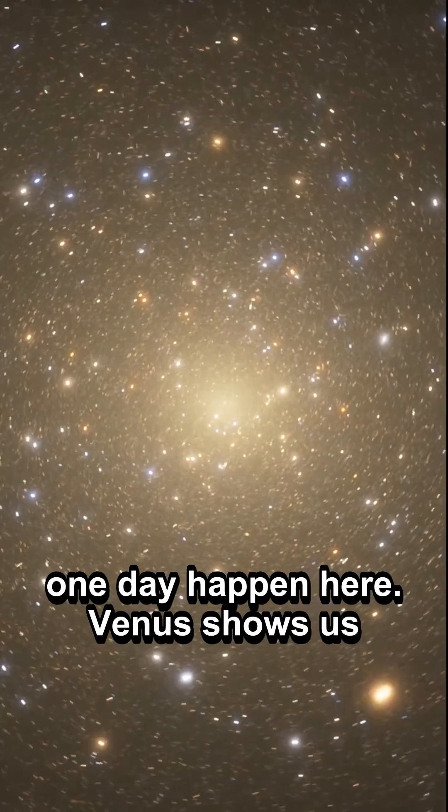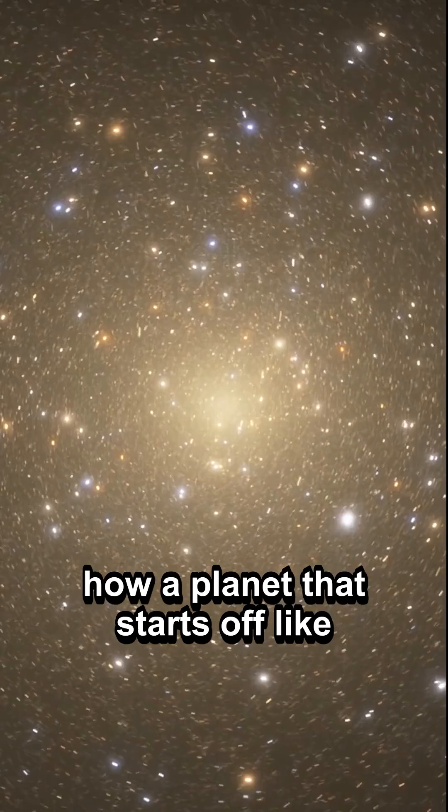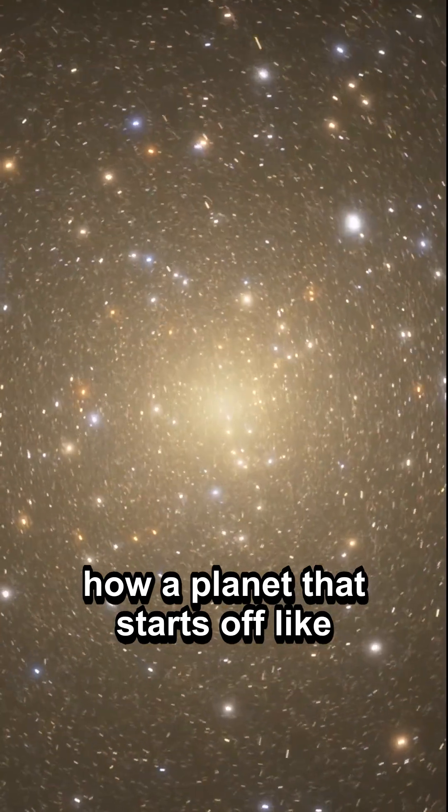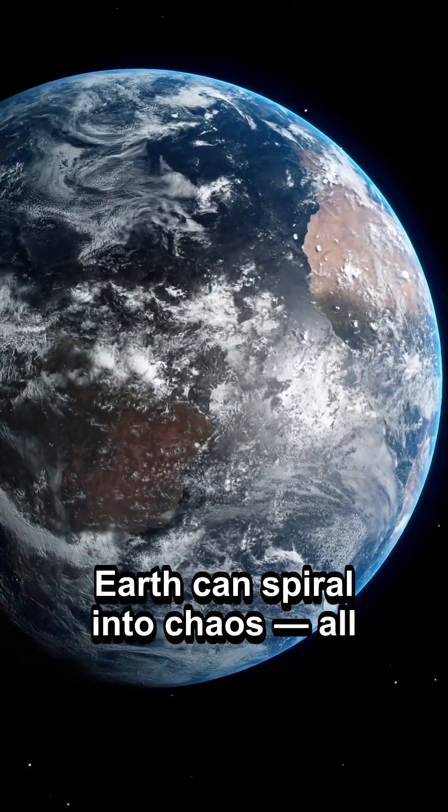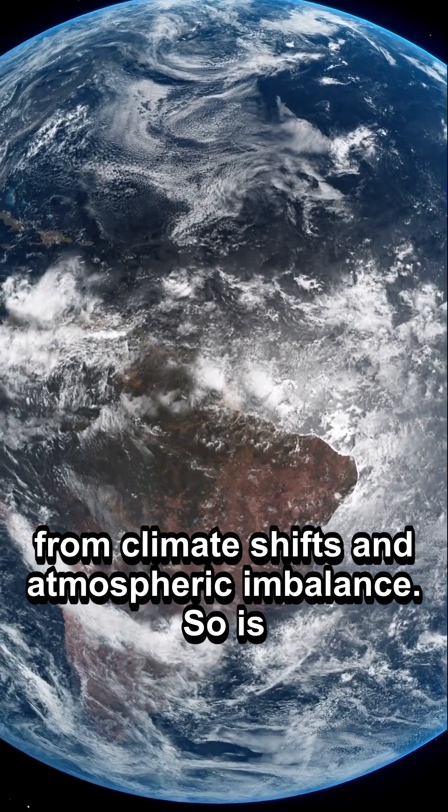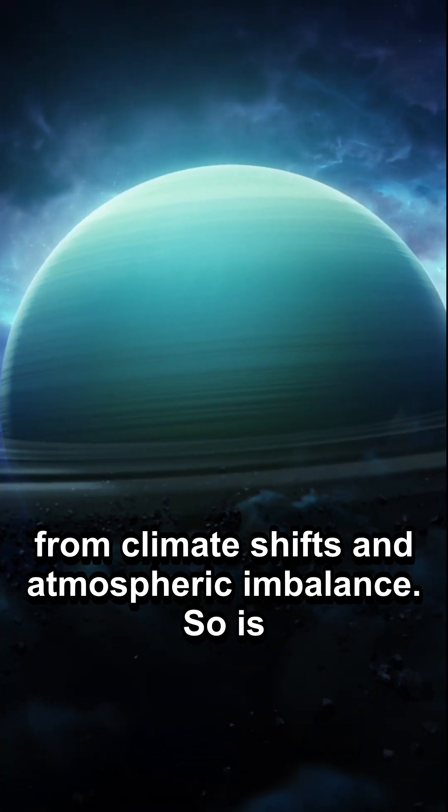And whatever happened there could one day happen here. Venus shows us how a planet that starts off like Earth can spiral into chaos, all from climate shifts and atmospheric imbalance.